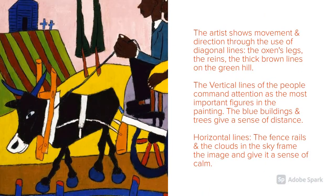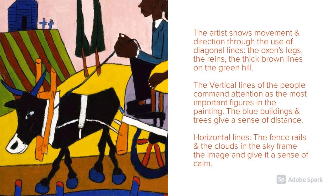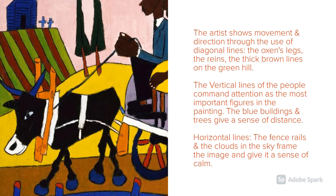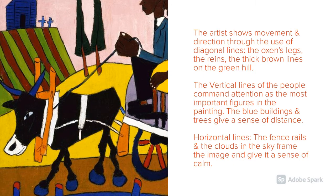The artist shows movement and direction through the use of diagonal lines. The tall, straight, vertical lines of the people command attention as the most important figures in the painting. The blue buildings and trees give a sense of distance — horizontal lines. The blue fence rails and the clouds in the sky frame the image and give it a sense of calm.